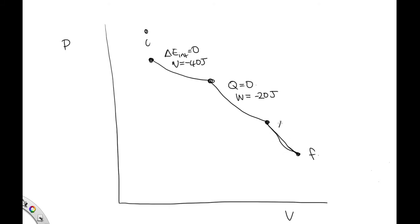This third part is again isothermal, so no change in internal energy. And the work done, we're told, is 30 joules, and that will be negative as it's expansion.